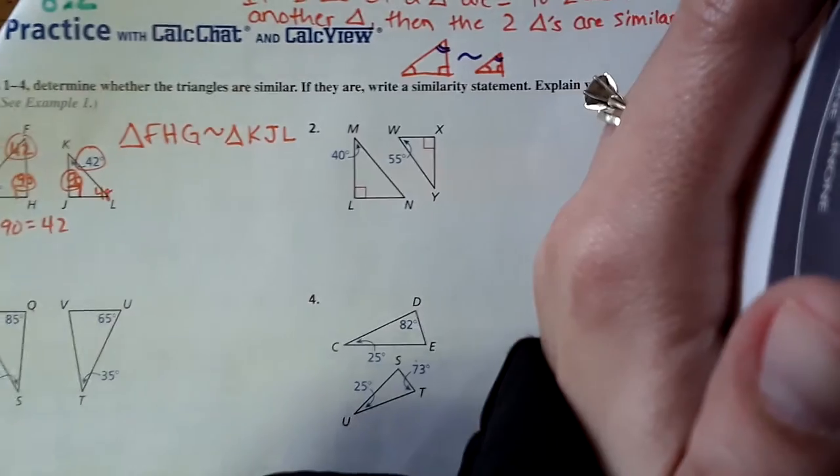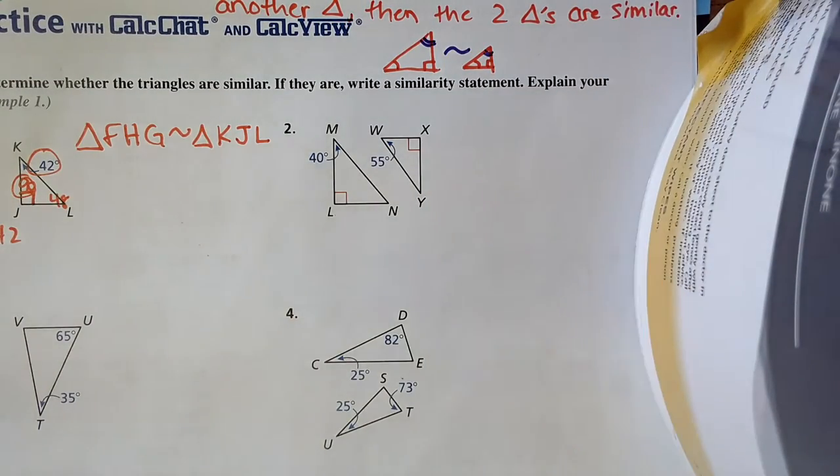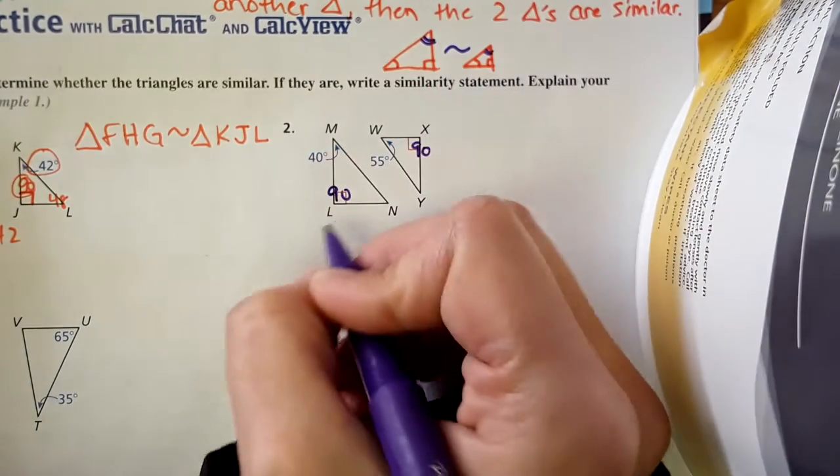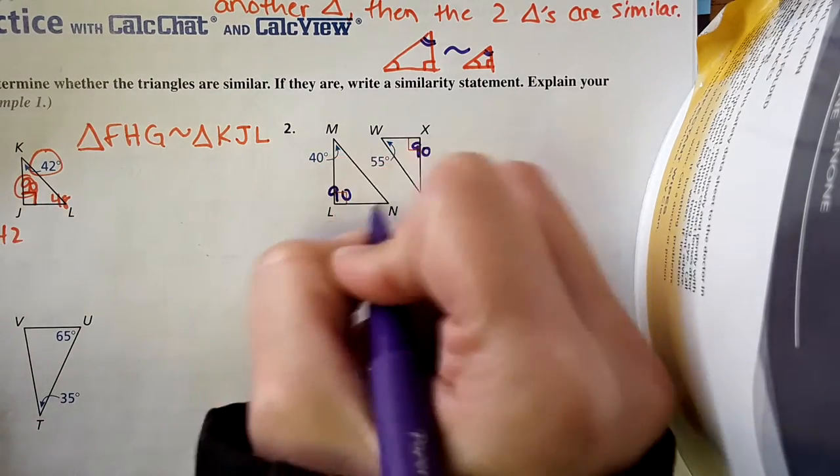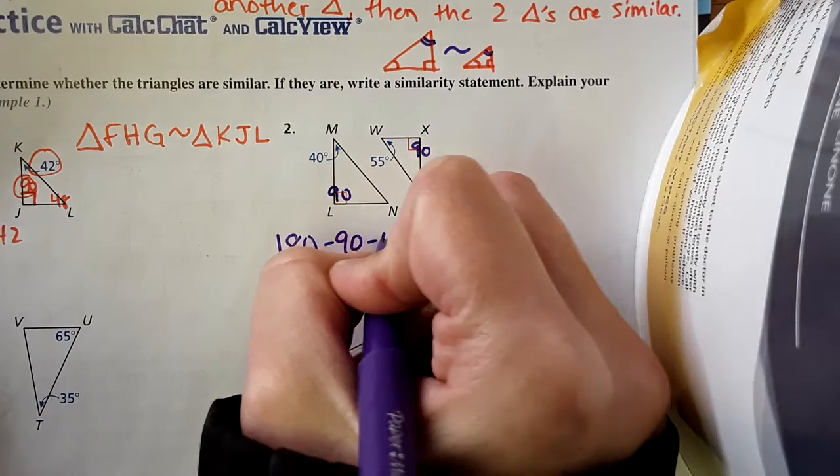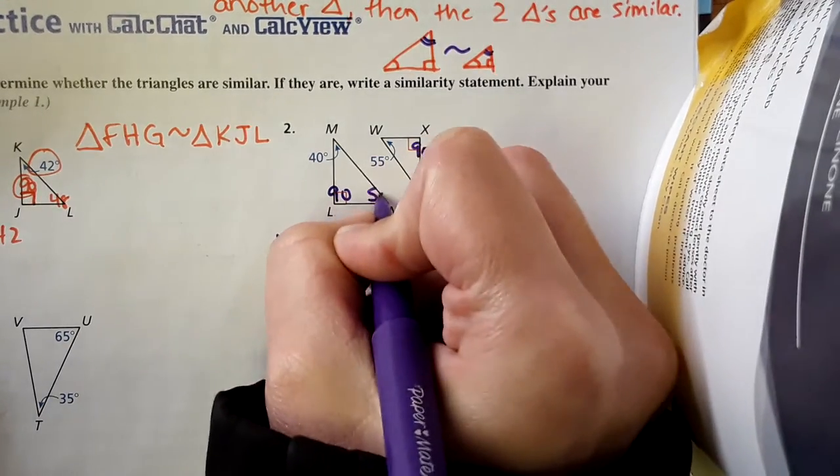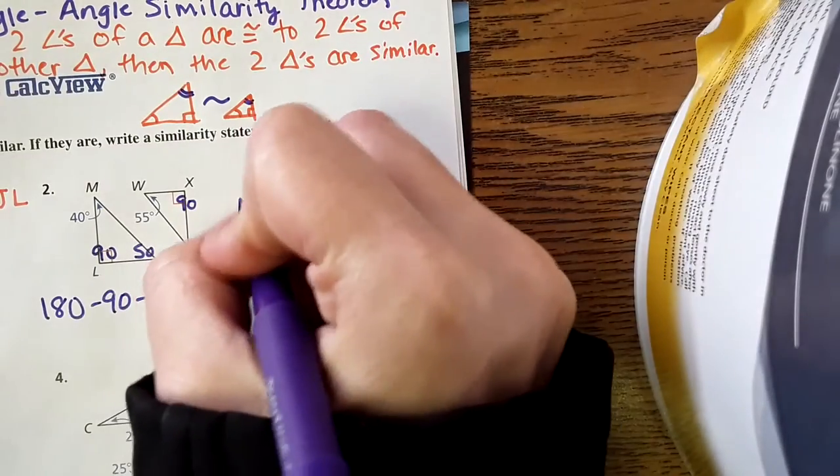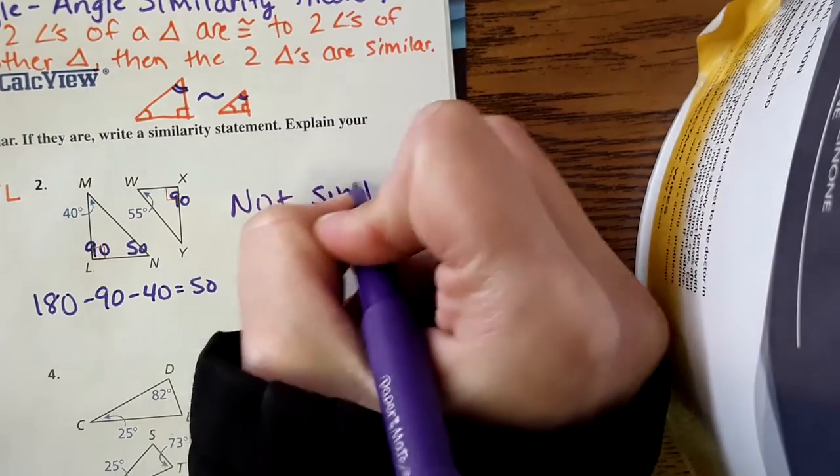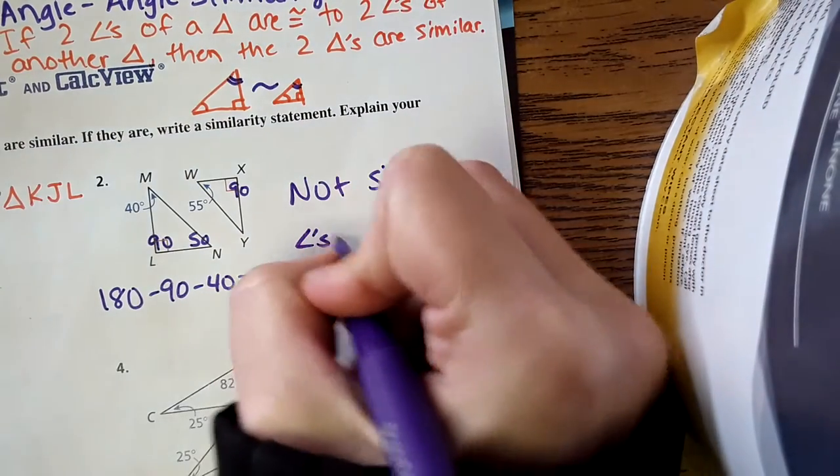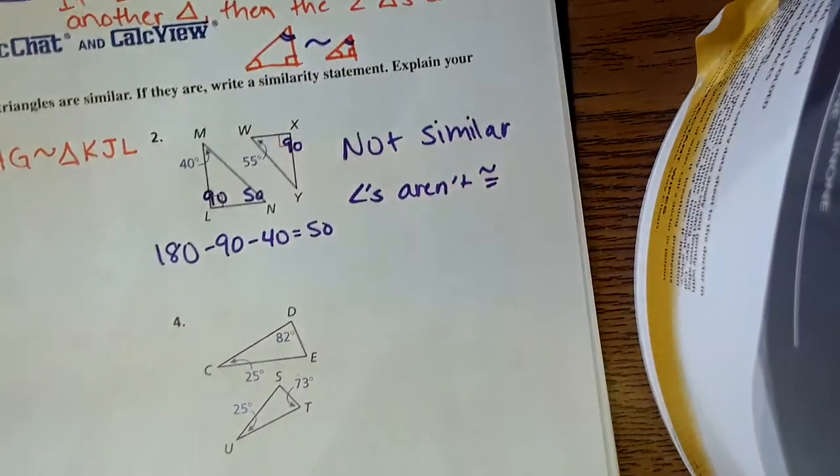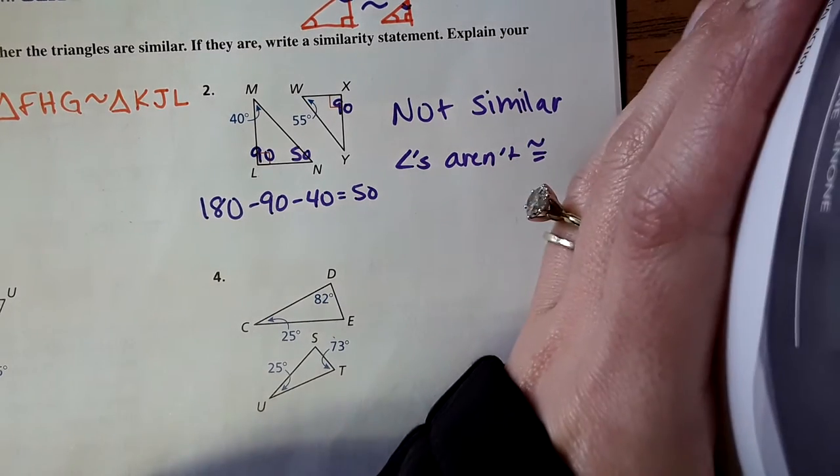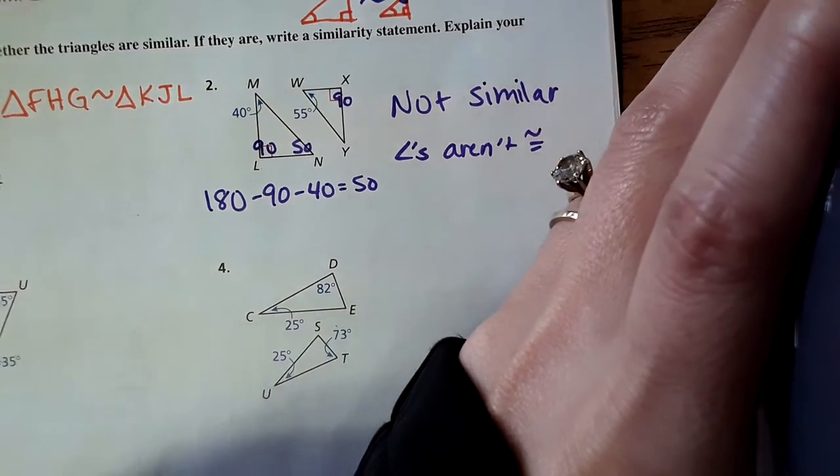Next problem, number two. Same idea. We have to determine whether they're similar or not. It looks like we have a 90-degree angle here. That's cool. But I don't have two matching angles. Let me see if there is two, it's just not shown. So I'm going to do 180 minus 90 minus 40. That comes out to 50. Oh, no. There's only one matching angle, not two. So therefore, these are not similar because the angles aren't congruent.